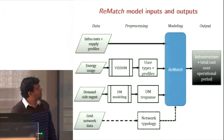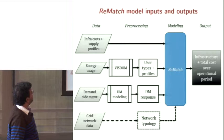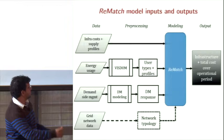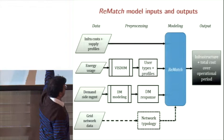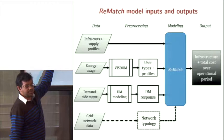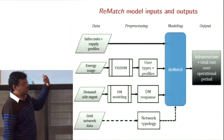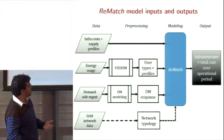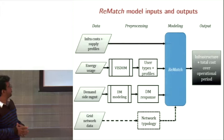The tool in our lab integrates several components. First, you specify the users you want, and if you have smart meter data, you process it through WISDOM, which immediately generates profiles automatically. Then you pass those into REMATCH. For demand side modeling, right now you can either input your own response model and costs for different policies, or use suggested response models from WISDOM. In the future, we plan to add network impacts.